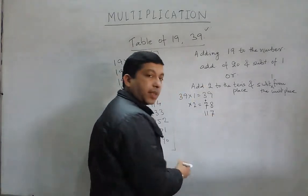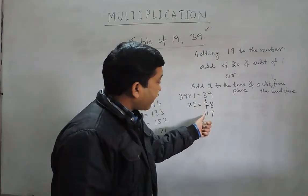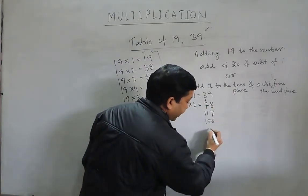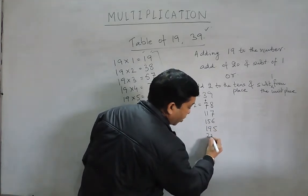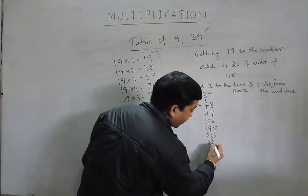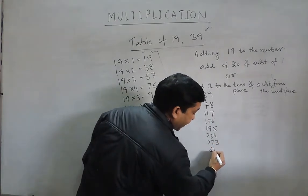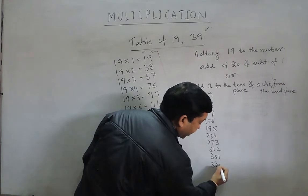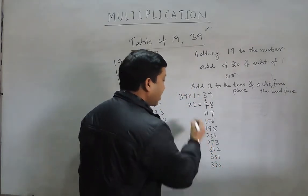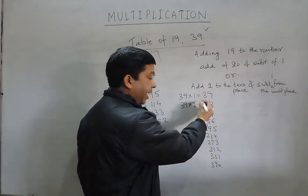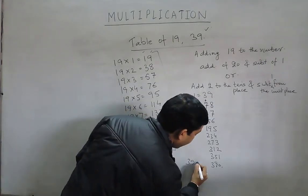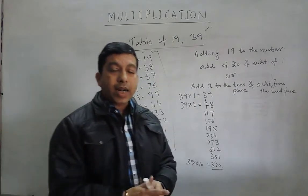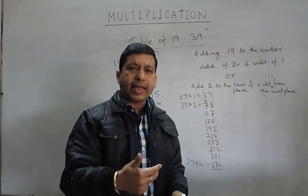The next number is 117 — again adding 4 to 7 and subtracting 1. Then 156, then 195, then 234, then 273, then 312, then 351, and finally 390. So this has become the complete table of 39, and by this same logic we can understand the tables of 19, 29, 39, 49, or any such number.